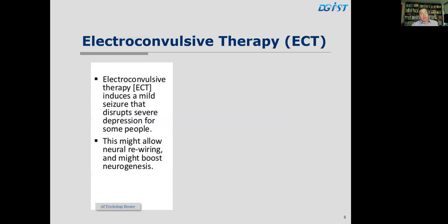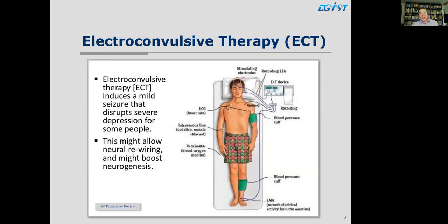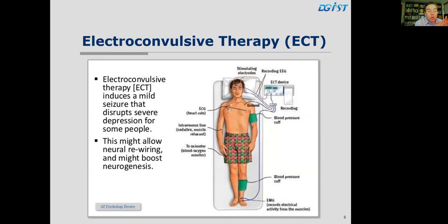Neurogenesis is the process of forming new nerve cells. ECT is performed under general anesthesia, requiring monitoring including ECG or EKG for the heart, an oximeter for blood oxygen and hemoglobin saturation, blood pressure measurement, muscle activity measurement related to the seizure, and an EEG recording to monitor the mild seizure generated. We'll discuss these modalities — ECG, EEG, and so forth — in more detail in the next lecture.